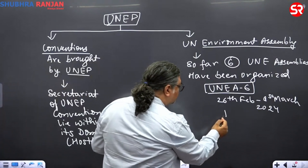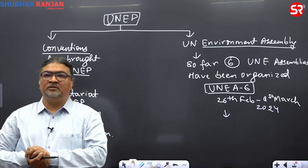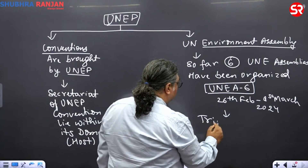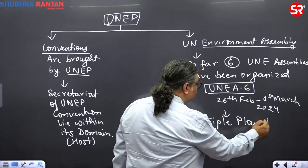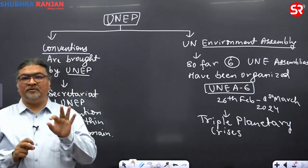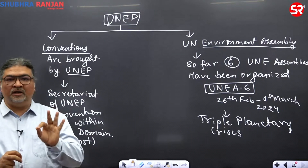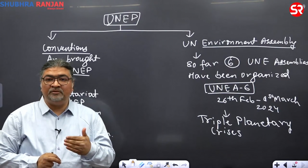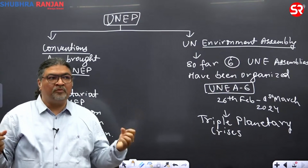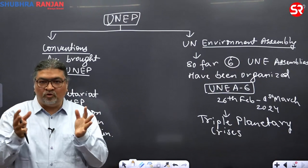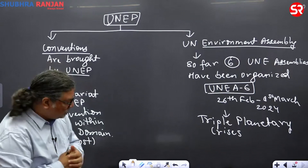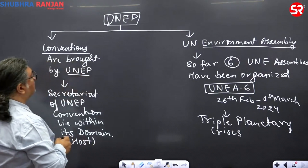This assembly highlighted what is called the Triple Planetary Crisis. It focused on three crises which are the areas where current issues exist and where exam questions are being asked. The UN has come out with a focus on multilateralism — how governments can cooperate with each other to tackle these three challenges.